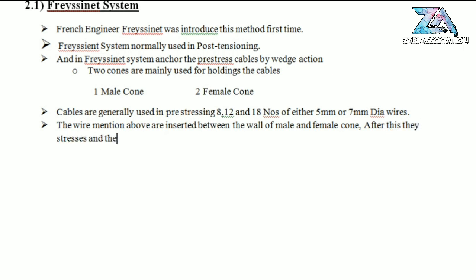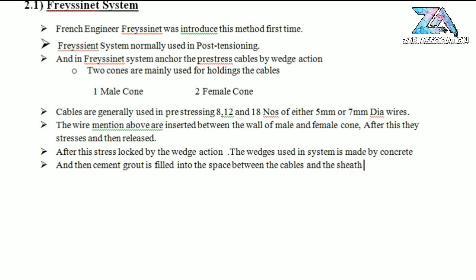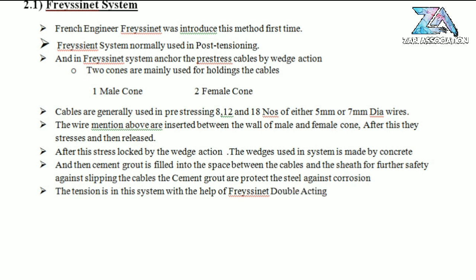The wires are inserted between the wall of the male and female cone. After stressing, the stress is locked by wedge action. The wedge used in this system is made of concrete. Cement grout is then filled into the spaces between the cables and the sheath, also called the duct, for further safety against slipping. The cement grout also protects the steel against corrosion. Stressing is done with the help of a Freyssinet double-acting jack.